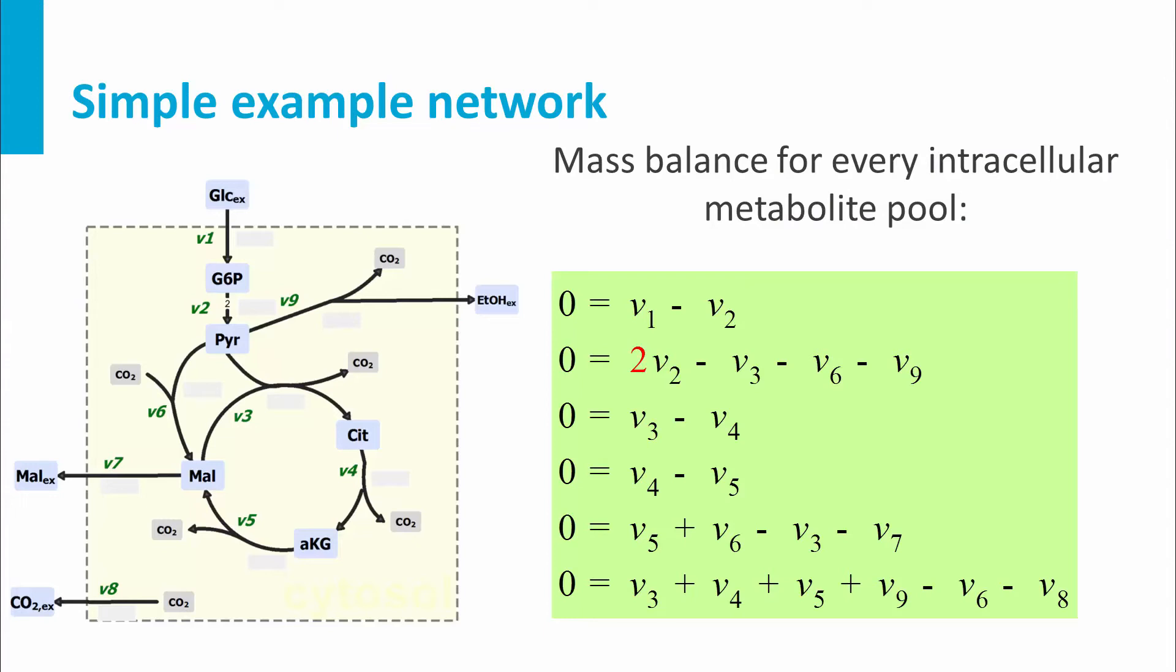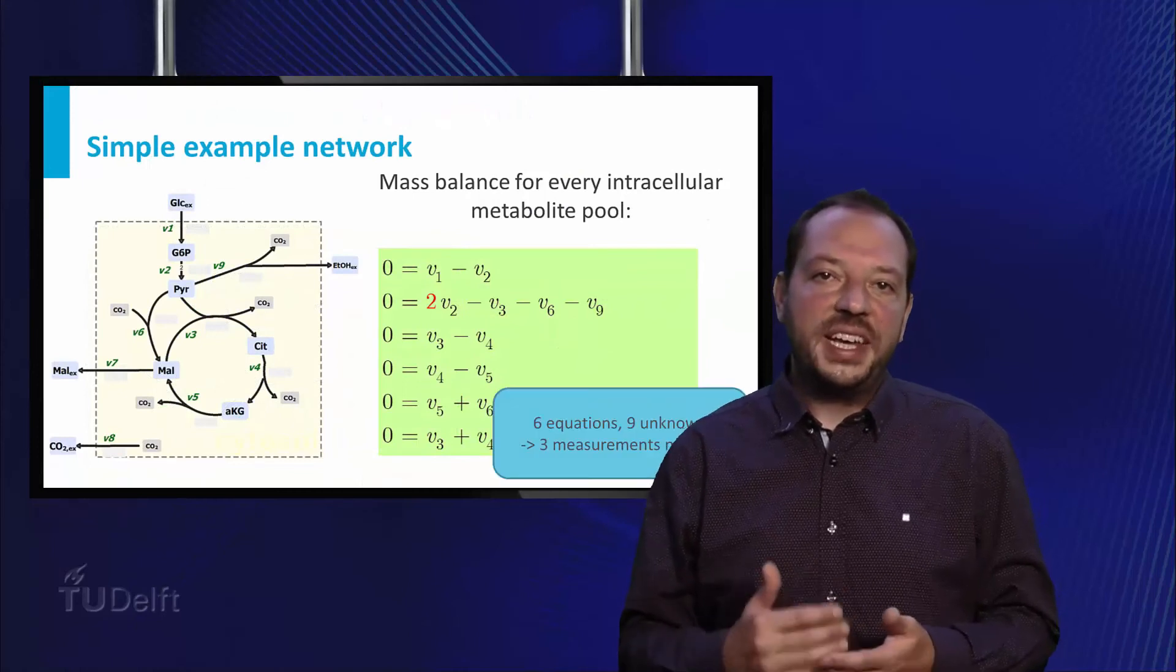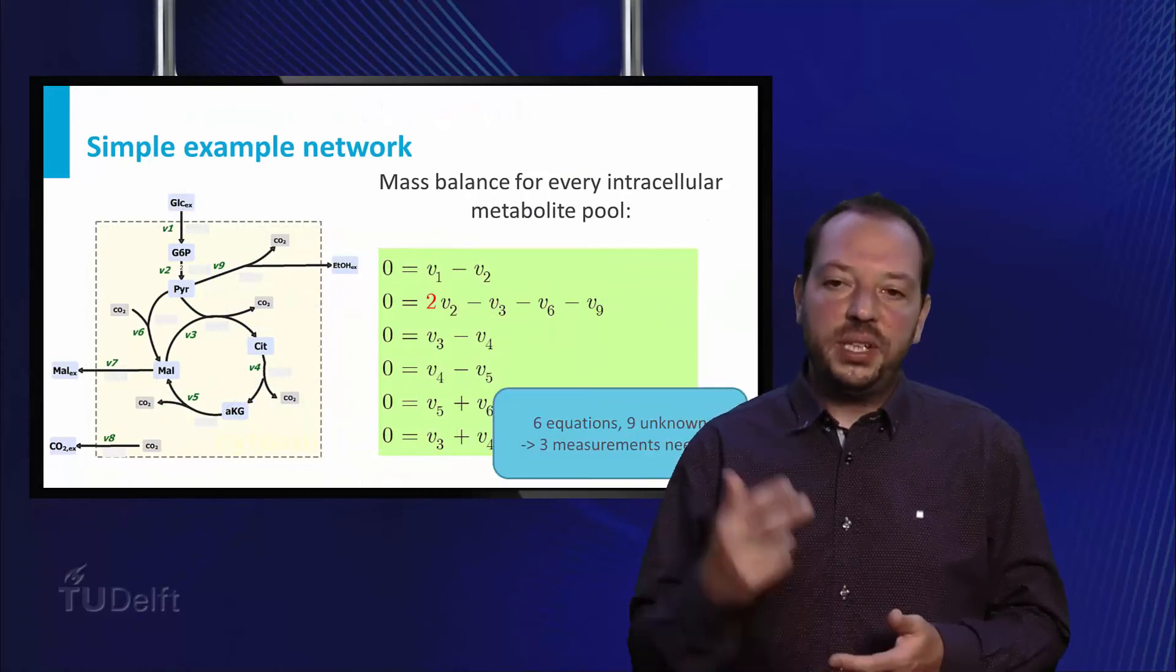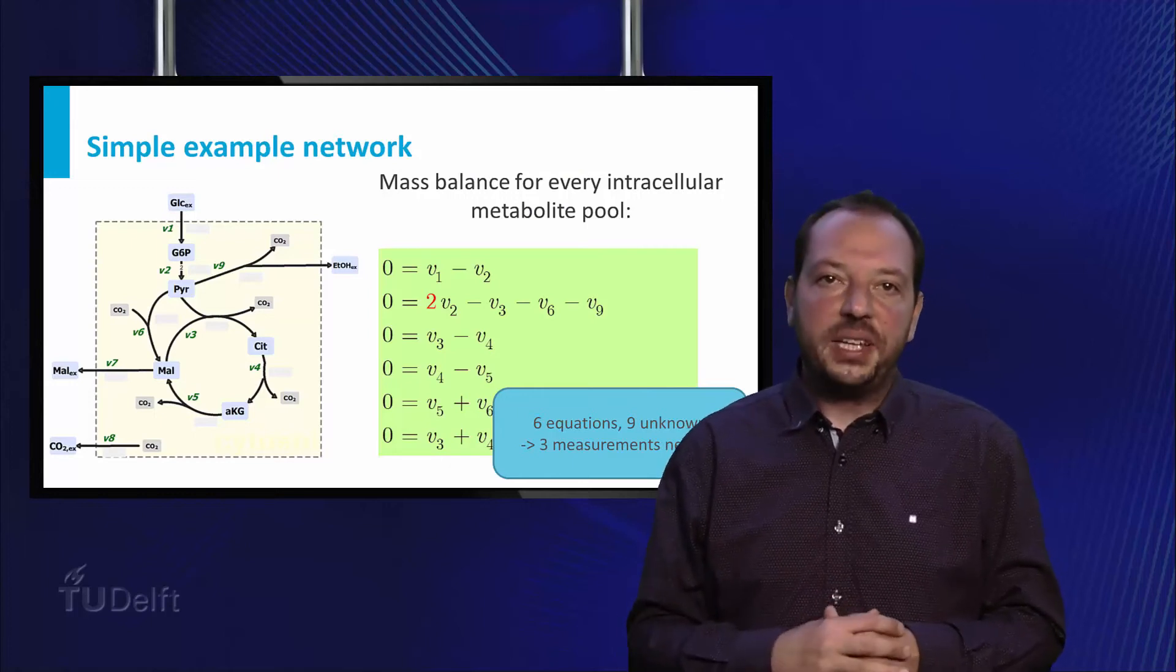We count a total of 9 fluxes, 4 of those connect to the extracellular space, 5 are intracellular. With 6 relations and 9 unknown fluxes, we would need 3 measured rates to calculate the remaining fluxes.